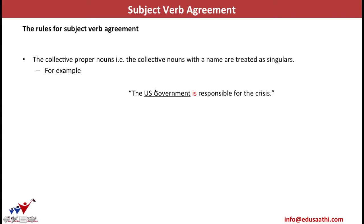Rule 7: collective proper nouns — collective nouns with a name — are also treated as singulars. For example, the Indian Army, the U.S. Government, the Pakistani Committee. The U.S. Government includes many ministers at central, state, and district levels, but it is given a single name and referred to as a single entity. So: 'The U.S. Government is responsible for the crisis.'